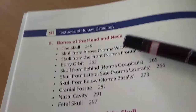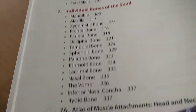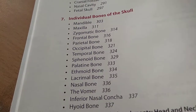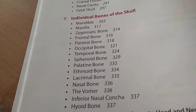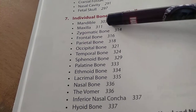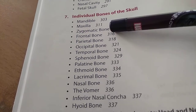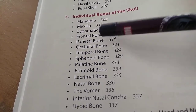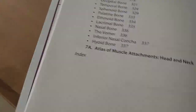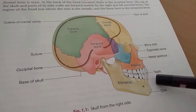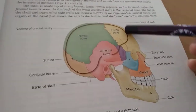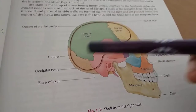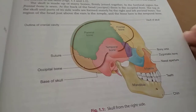For head and neck, they are covering the skull fully. Individual bones of the skull - mandible, maxilla, zygomatic bone, frontal bone, parietal bone, occipital - they have shown all of that here. Mandible, frontal, parietal, occipital - everything is shown here.